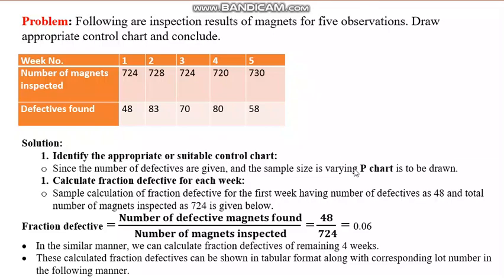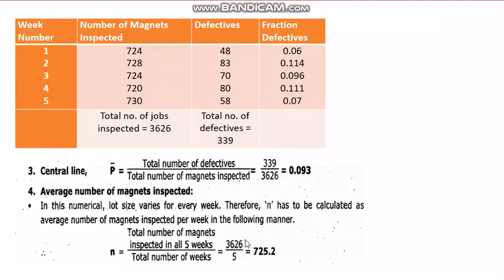Second, calculate the fraction defective for each week. For the first week: 48 defectives out of 724 inspected gives fraction defective = 48/724 = 0.06. Similarly calculate for the remaining four weeks. These calculated fraction defectives are shown in a table along with the corresponding week number.